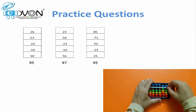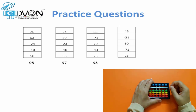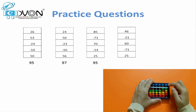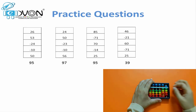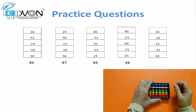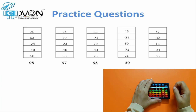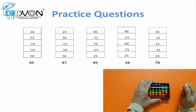Last two questions. Make your abacus 0. First: 46, minus 21, plus 60, minus 71, plus 25. Answer: 39. Last question: 42, minus 12, plus 15, minus 31, plus 65. Answer: 79.